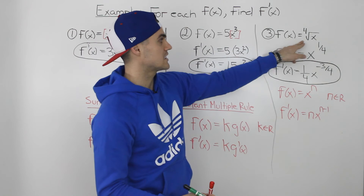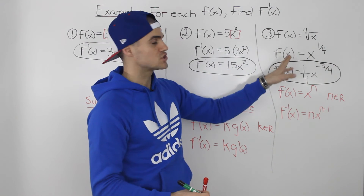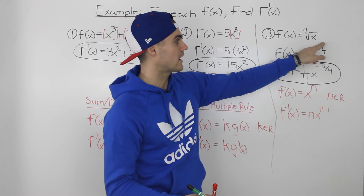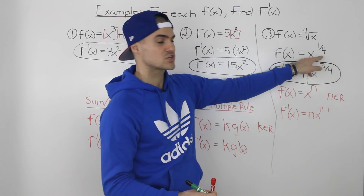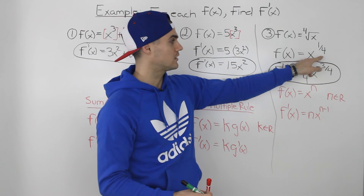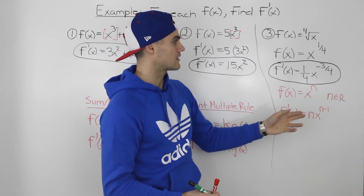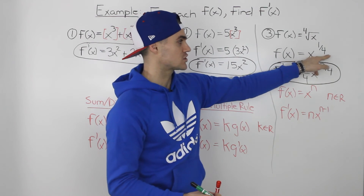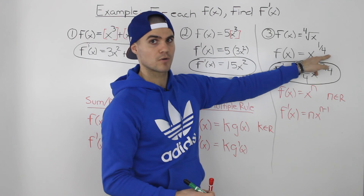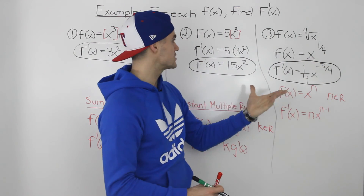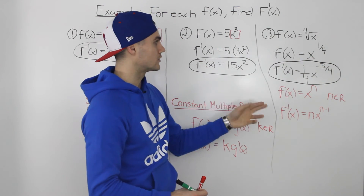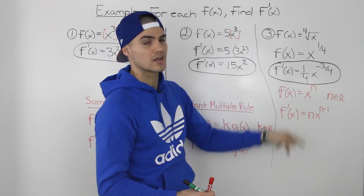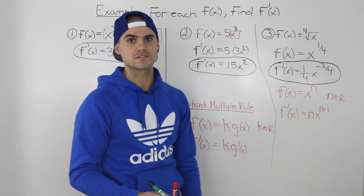So whenever you see any radicals, change them into exponential form — you'll usually have some kind of fraction in the exponent. The same process applies: treat that fraction in the exponent as you would a regular number. Bring it down, subtract 1, and you get your final answer.